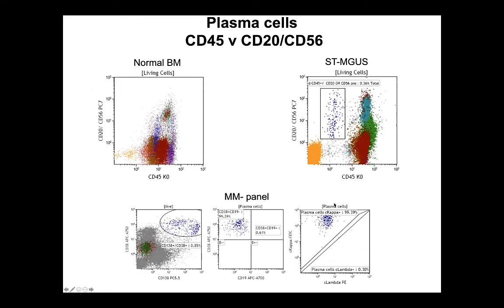Although the myeloid lymphoid screening tube is not capable of gating plasma cells because CD38 is not incorporated in the tube, we complemented the analysis template with a pattern recognition dot plot of CD45 versus CD20 and CD56 out of living cells. This is an example of a normal bone marrow sample, and the upper left rectangle should be completely empty of any events. On the right is a bone marrow sample with MGUS, and we can see an aberrant plasma cell population around 0.4% of total that have down-regulated CD45 and acquired either CD20 or CD56. By reflexing to the multiple myeloma panel — shown in the dot plots at the bottom of the slide — it was confirmed that they are CD19 negative, CD56 positive, and cytoplasmic kappa light chain restricted.